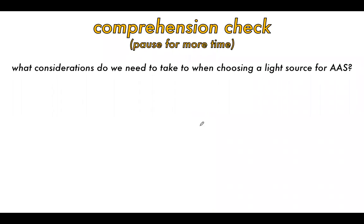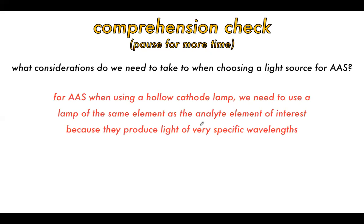For the comprehension check: what considerations are needed when choosing a light source for AAS? For AAS using a hollow cathode lamp, we need to use a lamp of the same element as the analyte, because hollow cathode lamps produce light of very specific wavelengths unique to that element, making it easier to selectively measure the analyte. Thank you for watching.